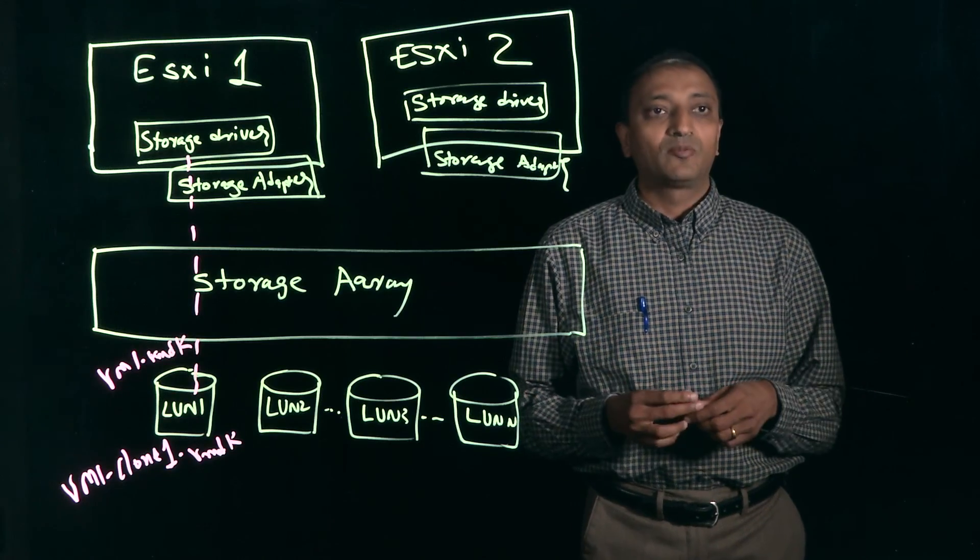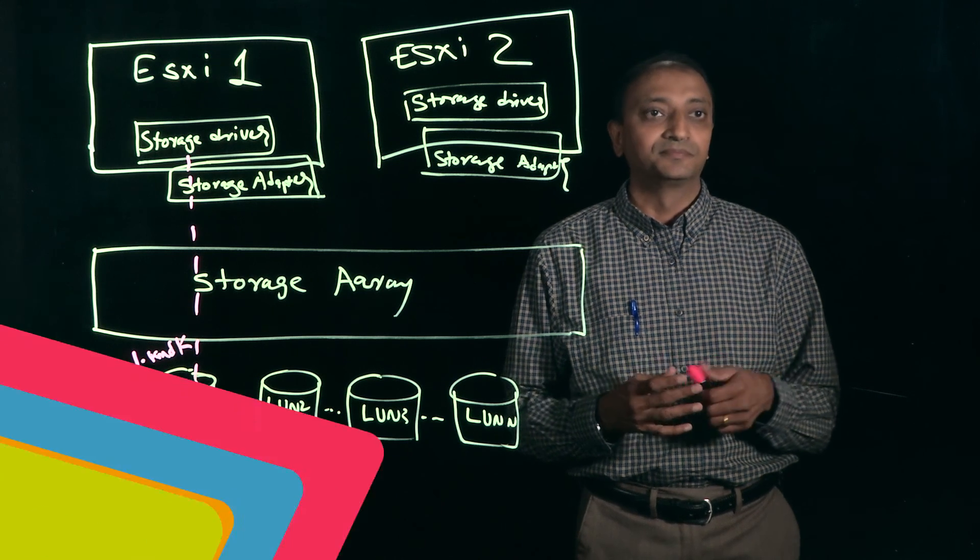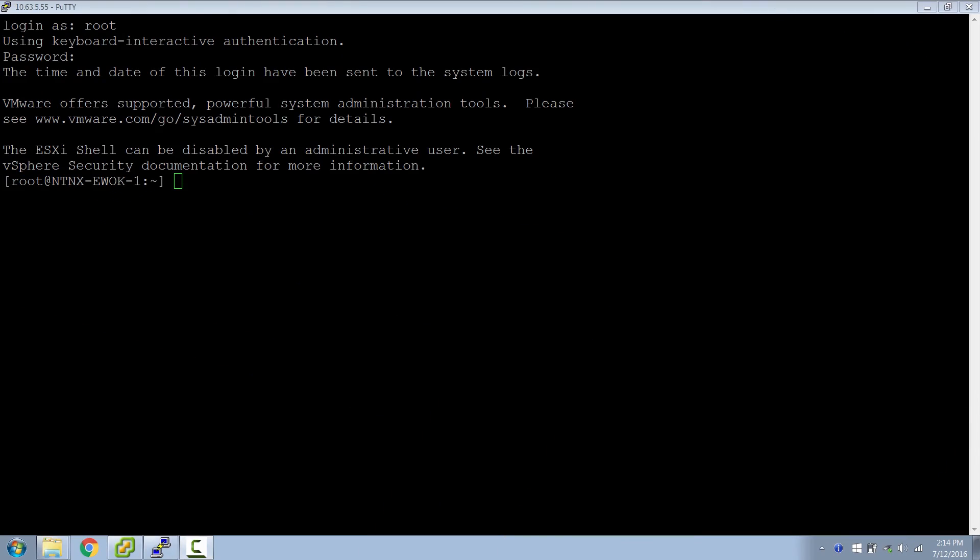Now let's check out some VAAI plugin command on the ESXi host. So I'm logged on to this ESXi box. In order to check if ESXi host has Nutanix VAAI plugin installed, I'm going to use this following command: esxcli software vib list and grep it for VAAI. So it shows that NFS-VAAI plugin is installed, vendor Nutanix and VMware accepted or certified.